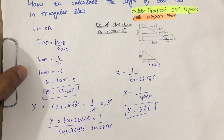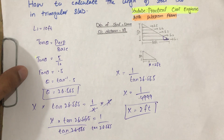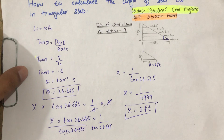So for this triangular slab you will get 8.1 kg. If you have any questions or want to ask about another topic, you can comment. Thank you for watching — don't forget to like, share, and subscribe to our channel.